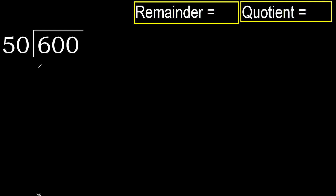600 divided by 50. 6 is less, therefore next. 60 is not less, therefore with 60: 50 multiplied by which number is nearest to 60 but not greater?